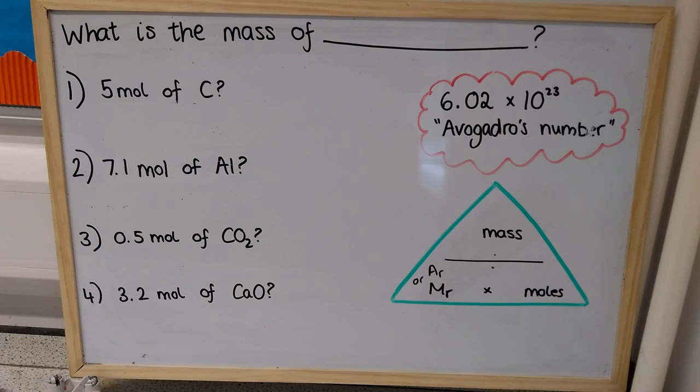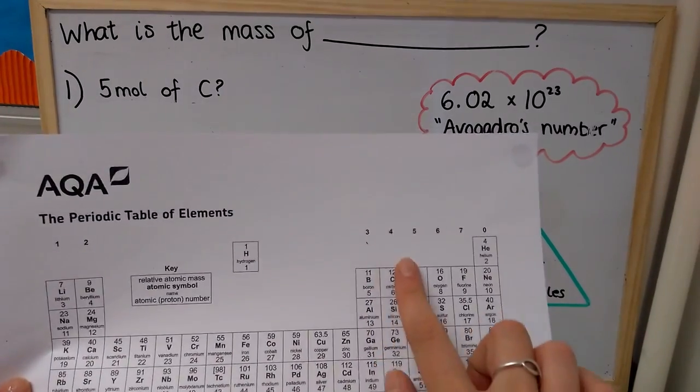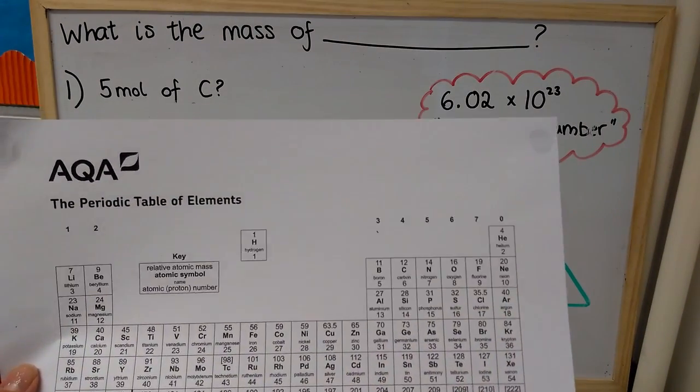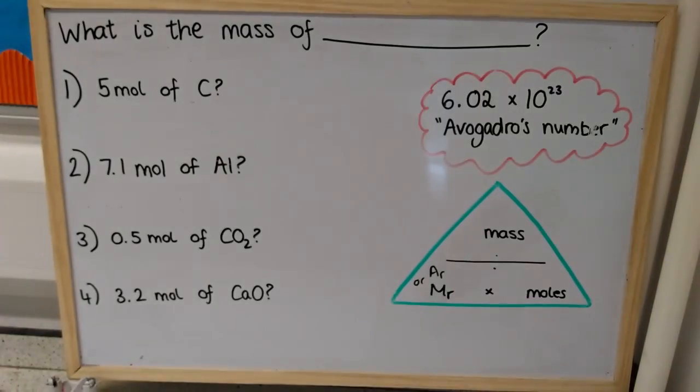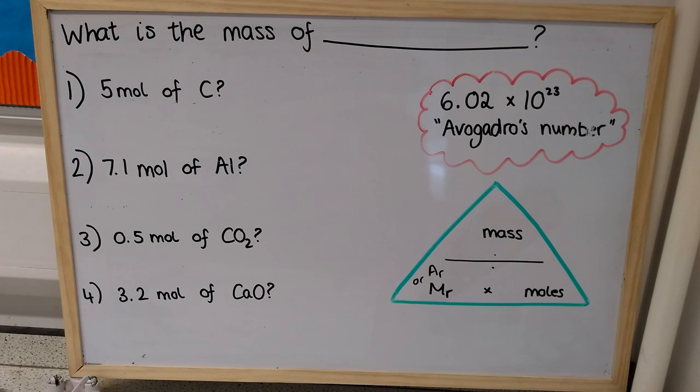So that sounds really complicated, but all it means is that if you take an element like carbon, we know has a relative atomic mass of 12. If you take 12 grams of carbon, then it will have 6.02 times 10 to the 23 atoms of carbon in it.